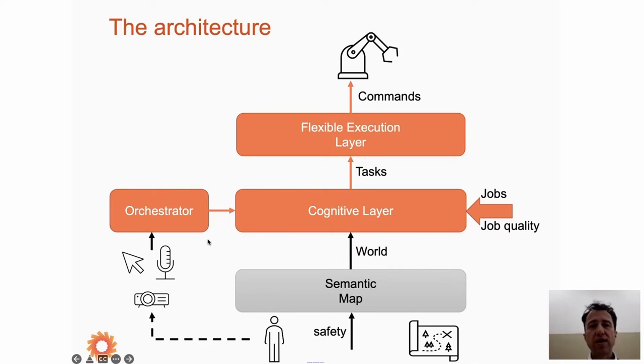The human can talk with the cognitive layer through several means: microphone, graphical user interface, whatever. The orchestrator transforms this into a message for the cognitive layer. The cognitive layer outputs a set of tasks for the robot, and these tasks are physically executed through the flexible execution layer that plans the motion and actions that the robot has to do.